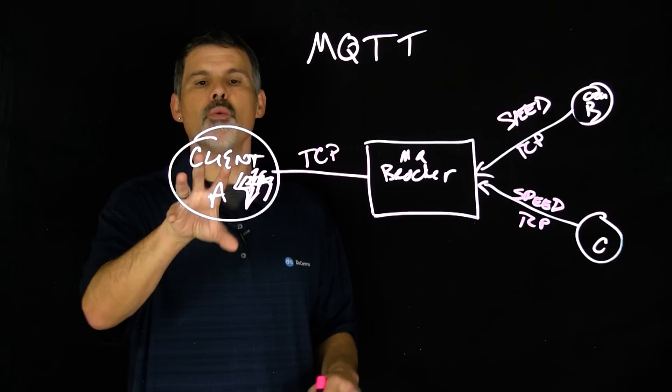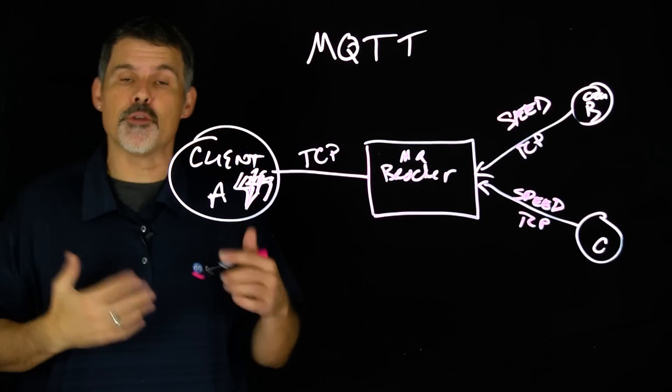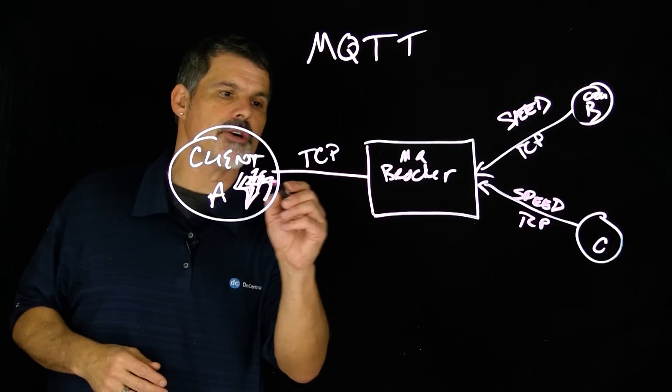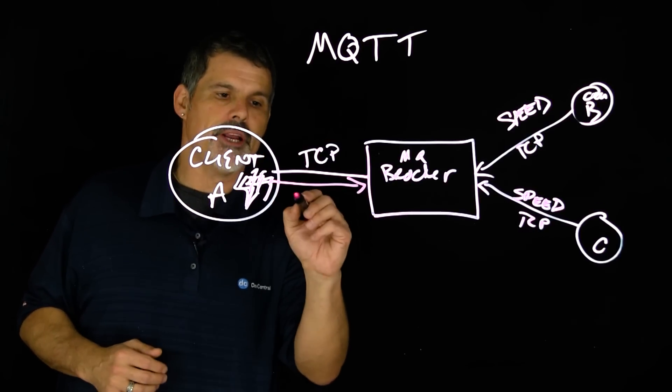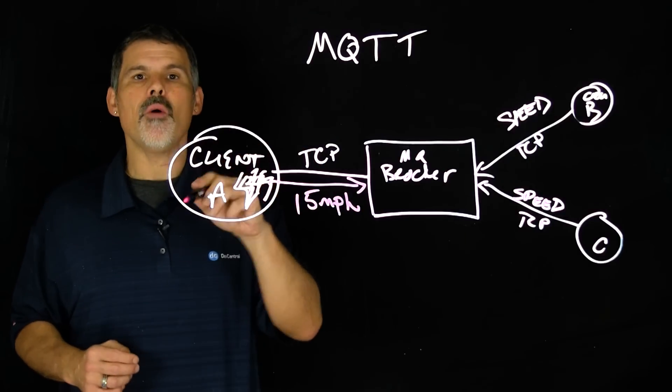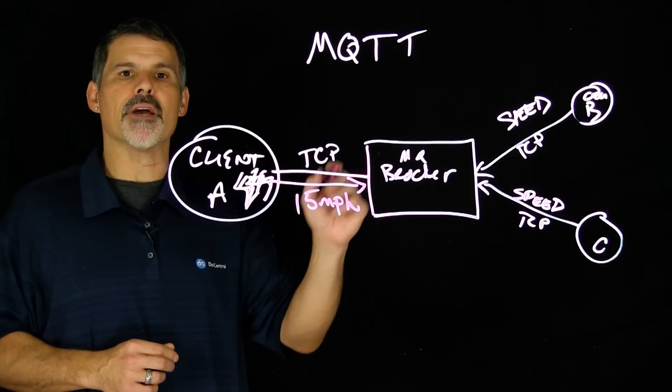Now over here, when this sensor, this client actually updates the topic of speed or actually publishes the speed information. And so say it publishes speed as 15 MPH. So now information has been published to the topic of speed.